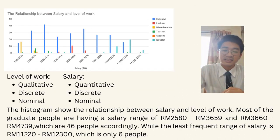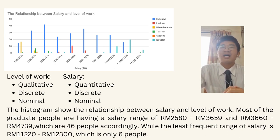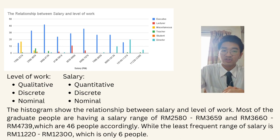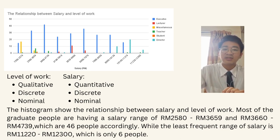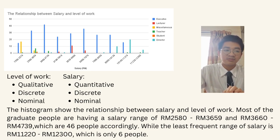Last but not least, we are talking about level of work with salary. Both are discrete and nominal data, but level of work is qualitative and salary is quantitative. This histogram shows the relationship between salary and level of work. Most graduates have a salary range of RM2,580 to RM3,659 and RM3,660 to RM4,739, which are 46 people each, while the least frequent salary range is RM11,220 to RM12,300, with only 6 people.